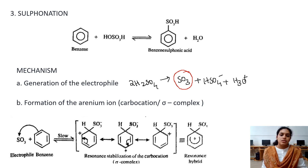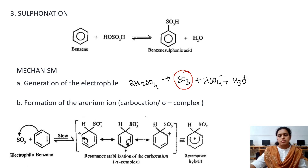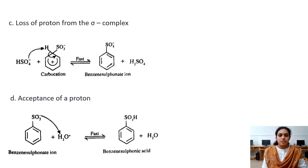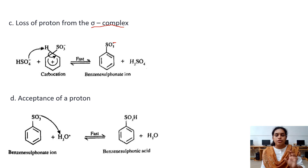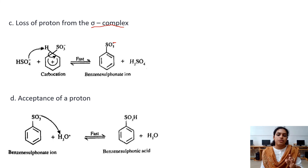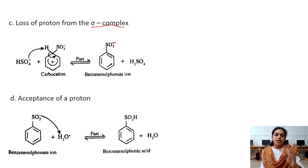The second step is formation of the sigma complex, as seen before. In the third step, loss of a proton from the sigma complex gives the product. But when SO3 attaches to the benzene ring, SO3- is formed. Since SO3 gains a negative charge, neutralization is needed before the reaction is complete. Therefore, sulfonation proceeds by four steps — the last step is neutralization of SO3-.